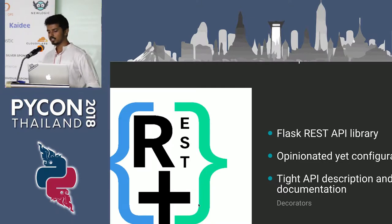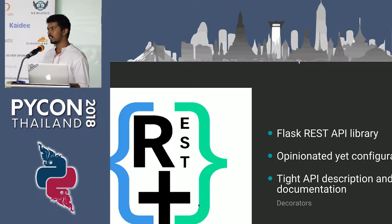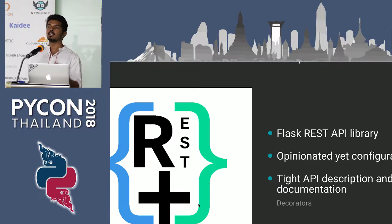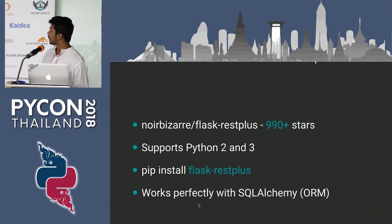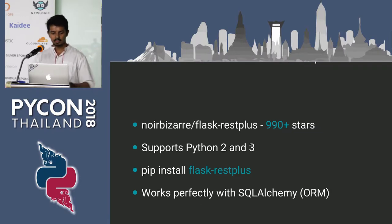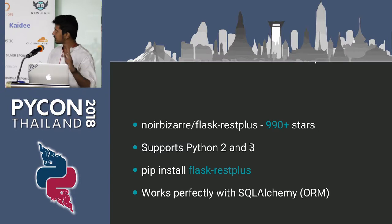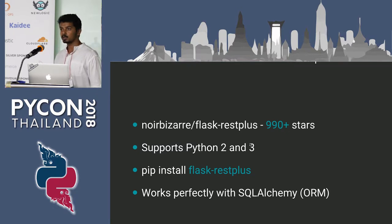What I like about Flask REST Plus is that it has a very tight API description. For example, you are creating APIs and you want to describe them so that they can be read by a tool like Postman or rendered by Swagger. These things are very easy with Flask REST Plus and they work using simple decorators. On GitHub it has around 990 plus stars, supports Python 2.7 and Python 3.3, is available via pip, and works perfectly with SQLAlchemy.